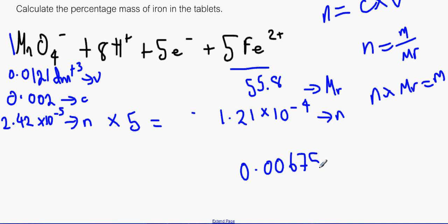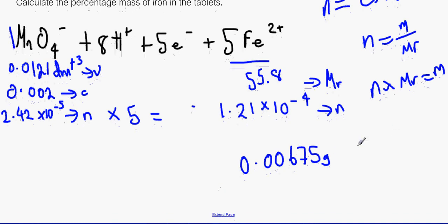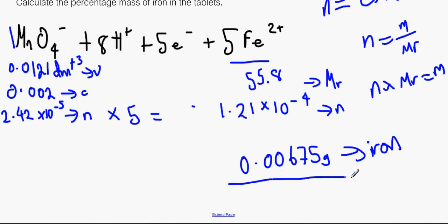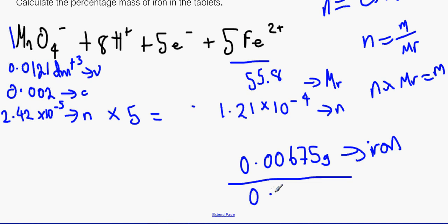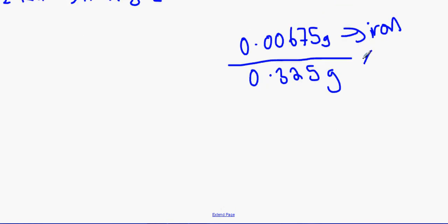Now all we need to do, this is how much ion is in there, and now to calculate the percentage of it, what we need to do, we need to divide it by the overall mass of the tablet, which is 0.325 grams. Remember they need to be in the same unit, and we need to times it by 100. Don't forget to times it by 100. Even if you are a mathematician, you do need to still write times 100 there. And that would make 2.08%. As you can see, not a lot of iron in there.